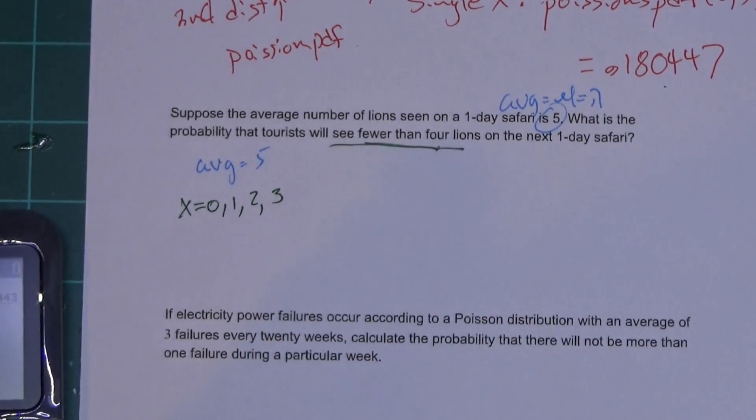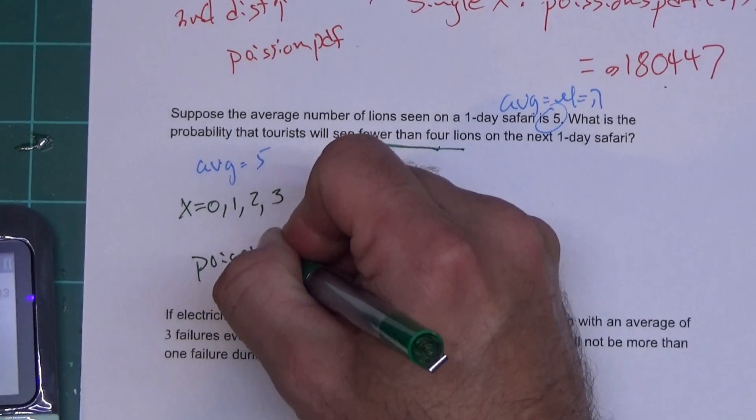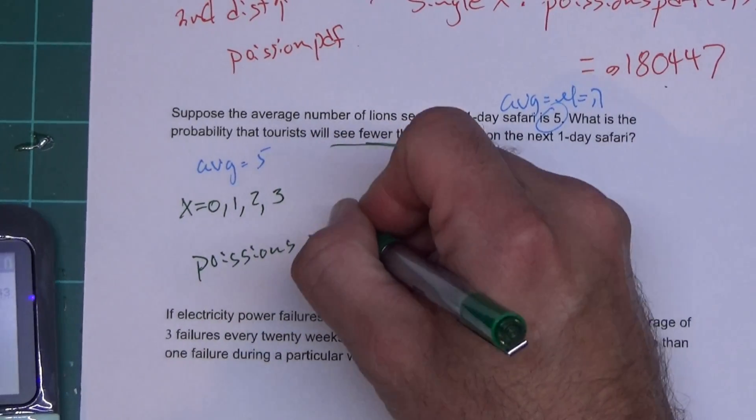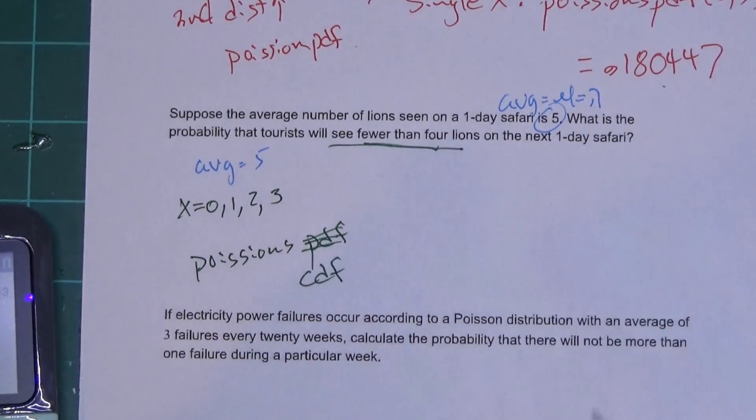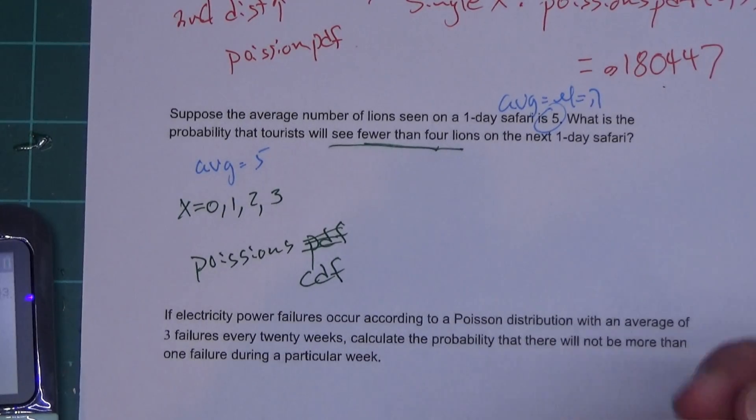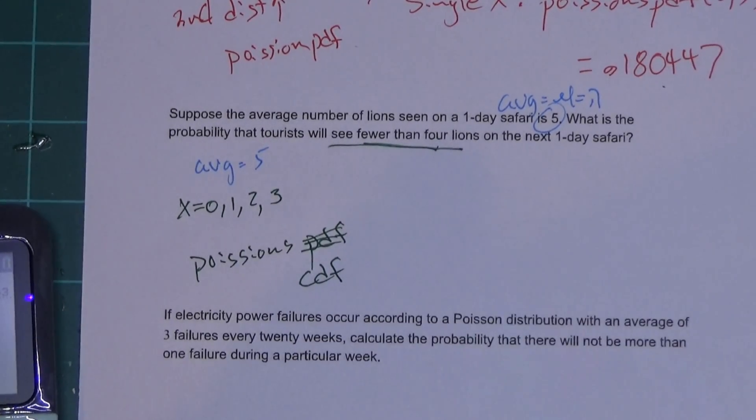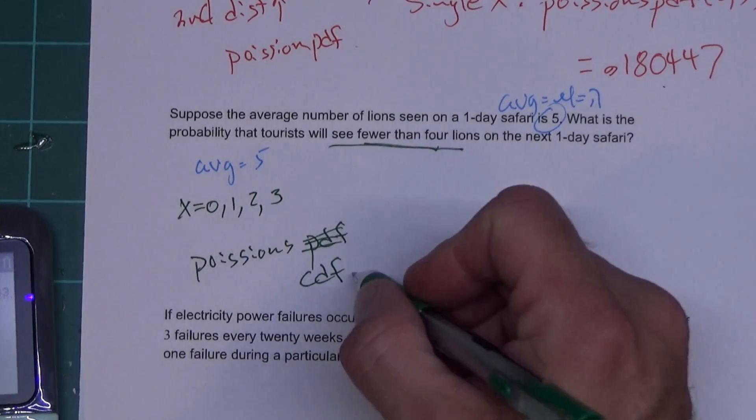Now this is going to be Poisson's - it's not going to be PDF. Oops, mistake on camera - CDF. It's going to be Poisson's CDF. P stands for point, C stands for cumulative. I'm cumulating X's so I need cumulative.